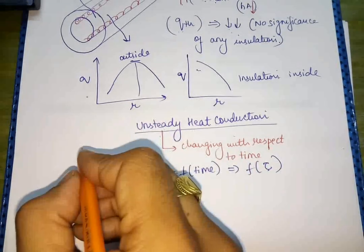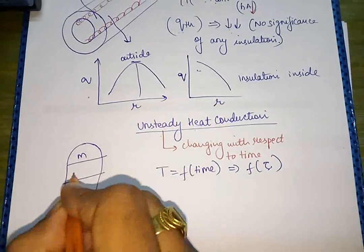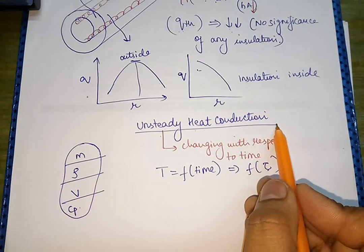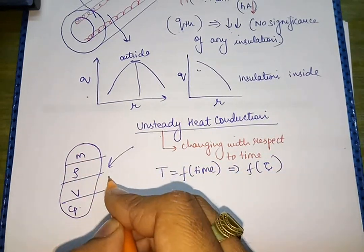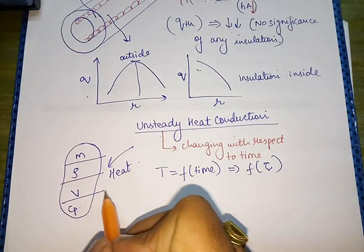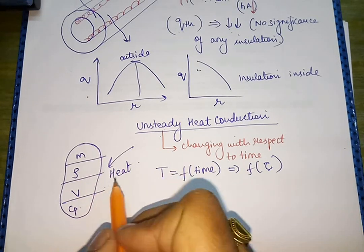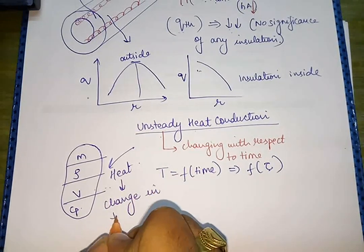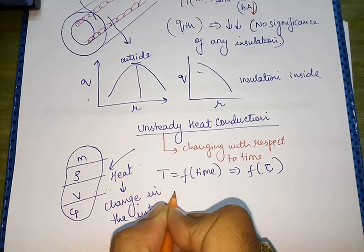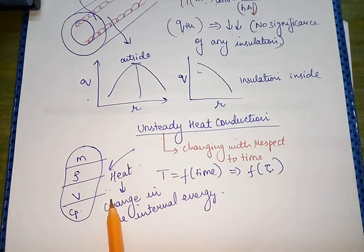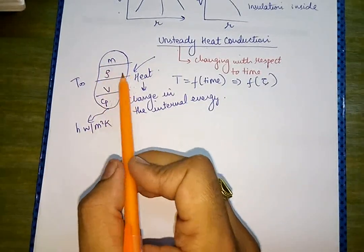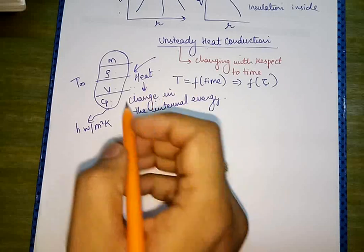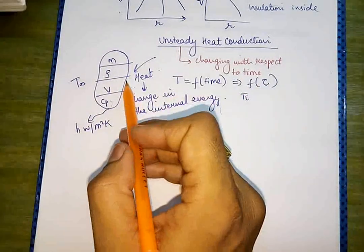Change in internal energy: consider a body with mass m, density ρ, volume V, and specific heat Cp. Its initial temperature is Ti. When heat is provided to this body, its state will change, and that change is manifested by the change in internal energy of the body. The body is kept in an ambient surrounding at temperature T_infinity. The initial temperature Ti is given, and the ambient acts as a thermal reservoir.